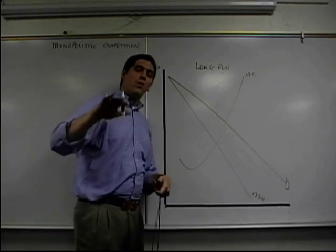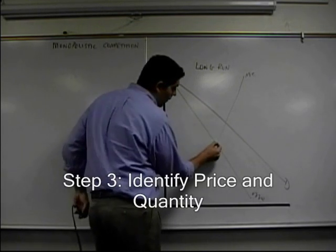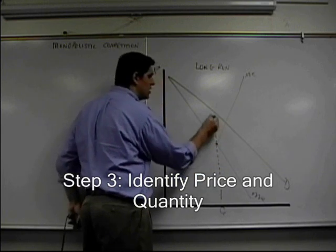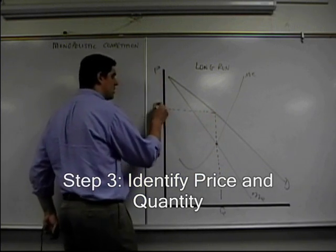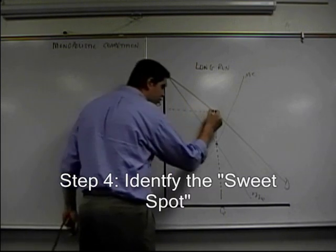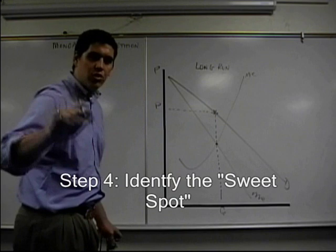You know in the long run this firm will have no economic profit. So we have to stop here before you draw ATC. What I want you to do is identify where MR equals MC, quantity down here, and of course they charge a price up to the demand curve. There's the price. The question is where does ATC go? Well, ATC needs to go right through this point. What I do is I draw a star. I call that the sweet spot. It has to go through the sweet spot.